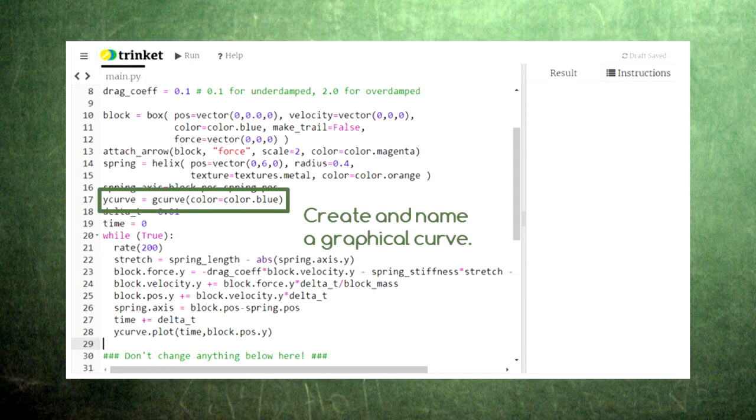Creating a graph in VPython requires two steps. First, we need to create and name something called a g-curve. This graphical curve is a record of the data points that we want to graph. To create a g-curve, all you need to do is specify a color for the graph.